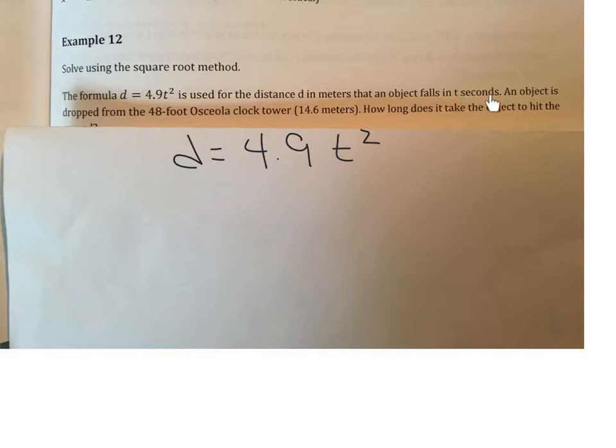What do we know? 48-foot, the distance is a 48-foot Osceola clock tower, which is 14.6 meters. Which one are we going to use? We're going to use 48 feet, or we're going to use 14.6 meters? If we go back and check, this formula is written in meters. So we're going to use 14.6 as the distance. We're being asked to find time, so that's what we're going to solve for t here.